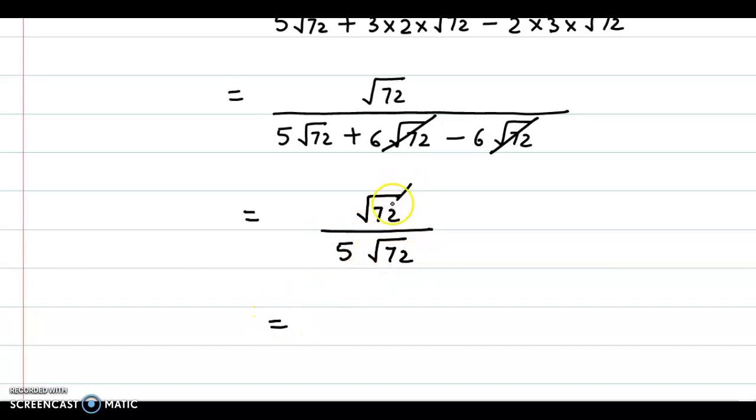Further we could cancel root 72 with root 72. So our final answer is 1 by 5.